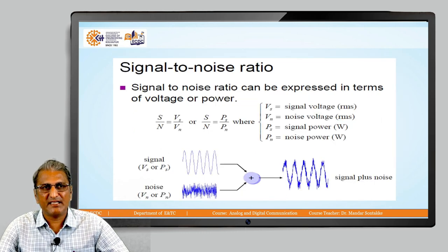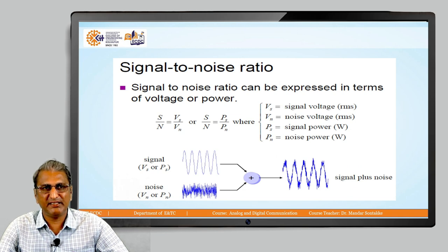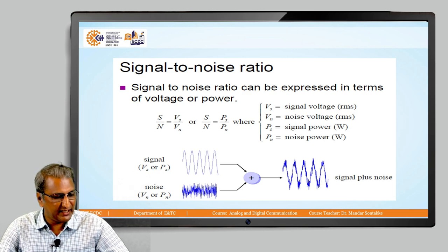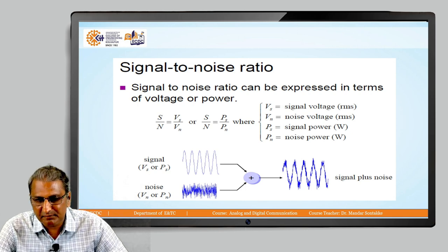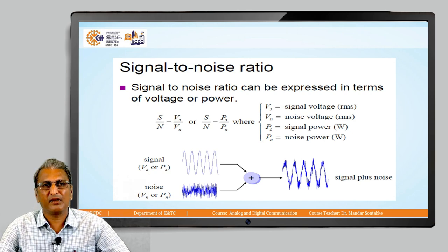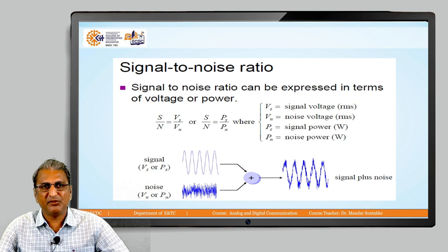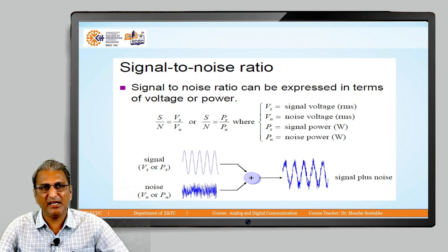We have SNR, signal-to-noise ratio. It is given by Vs upon Vn. Vs stands for signal voltage and Vn stands for noise voltage. S upon N is Vs upon Vn. In terms of power, it is given by Ps upon Pn. See the notation: Vs is signal voltage, Vn is noise voltage, Ps is signal power, and Pn is noise power.